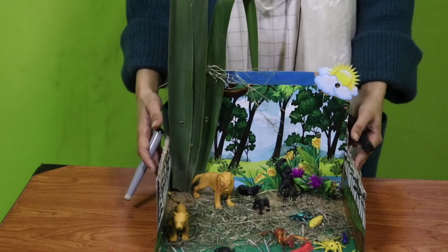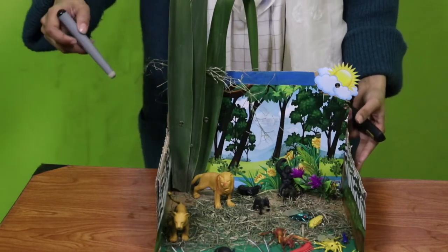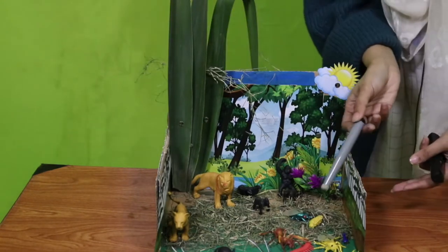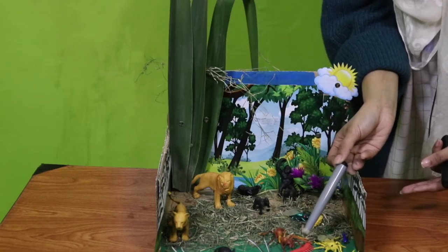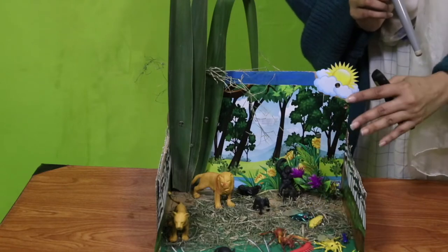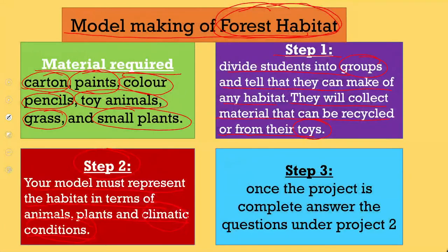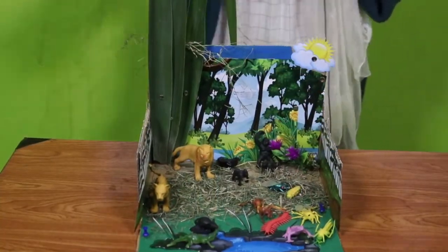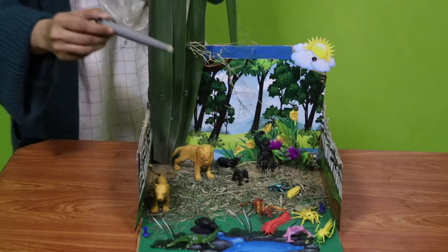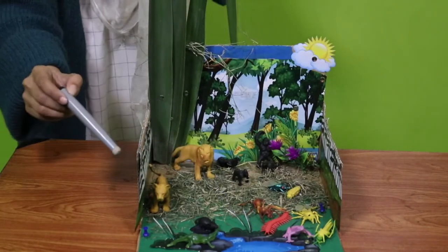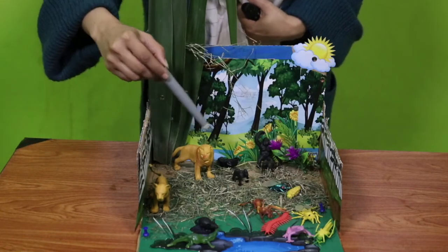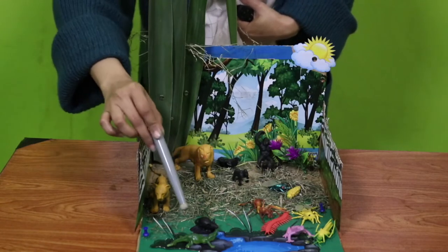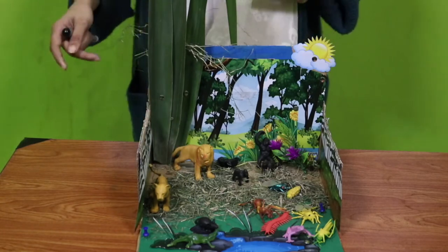My dear students, now I will show you my model. This is my forest habitat. Here you can see small invertebrates like caterpillar, flies, grasshopper, ants, and centipedes - these are the inhabitants of my forest. Here you can see different environmental conditions: soil, grass, plants, and water are visible.